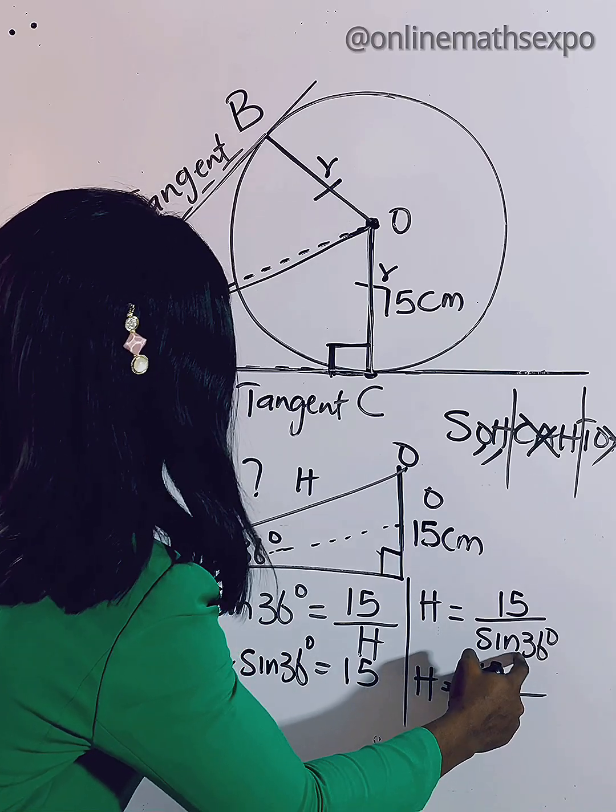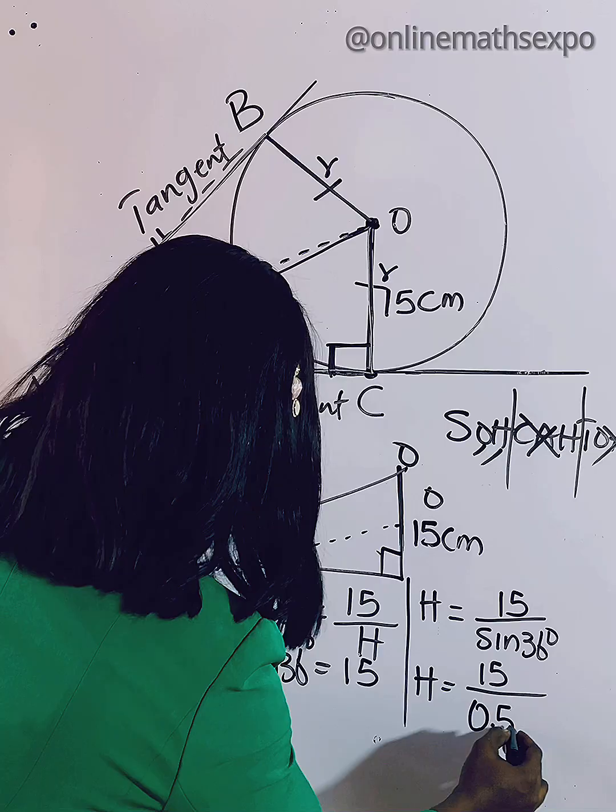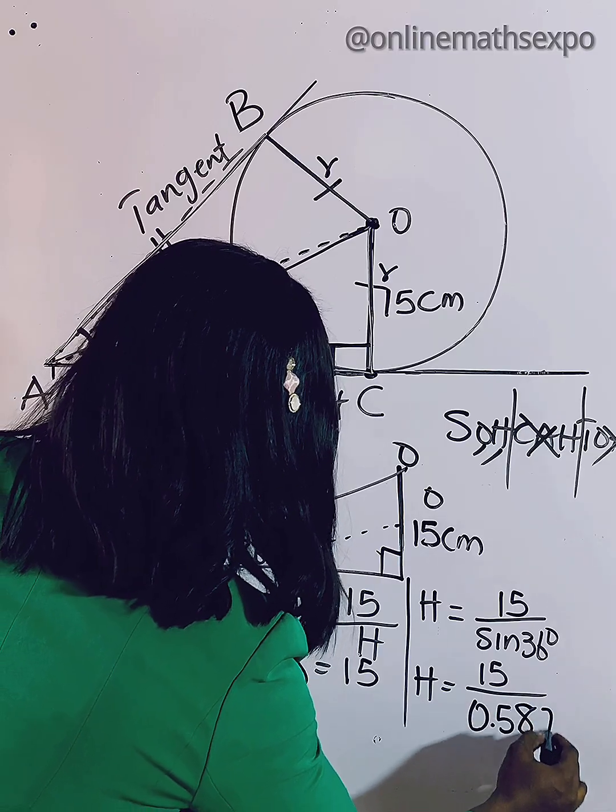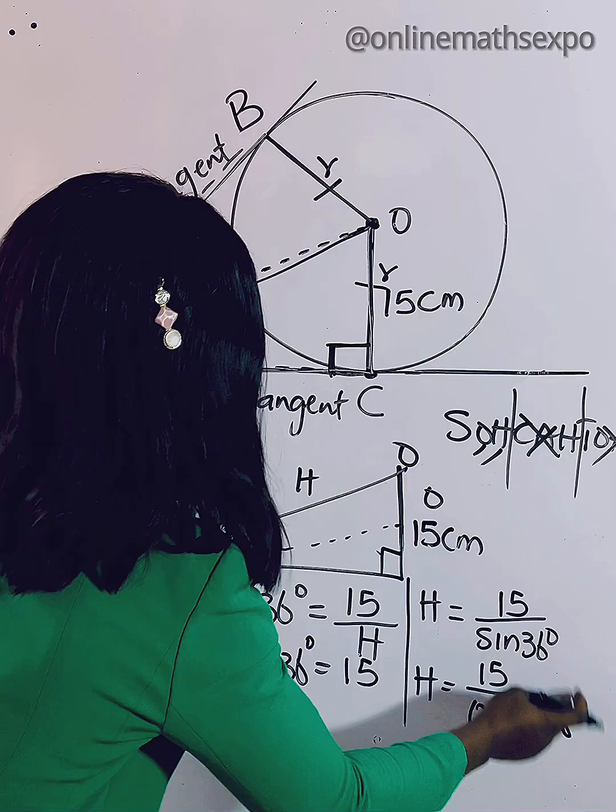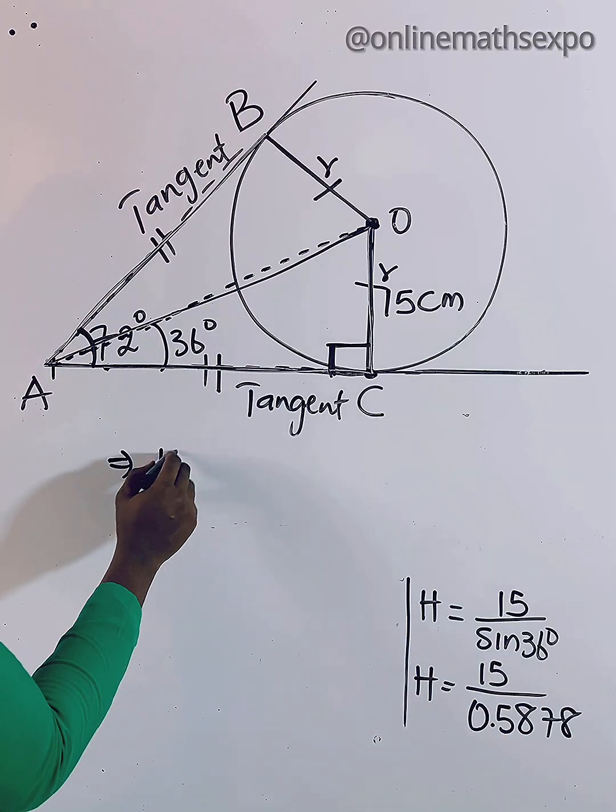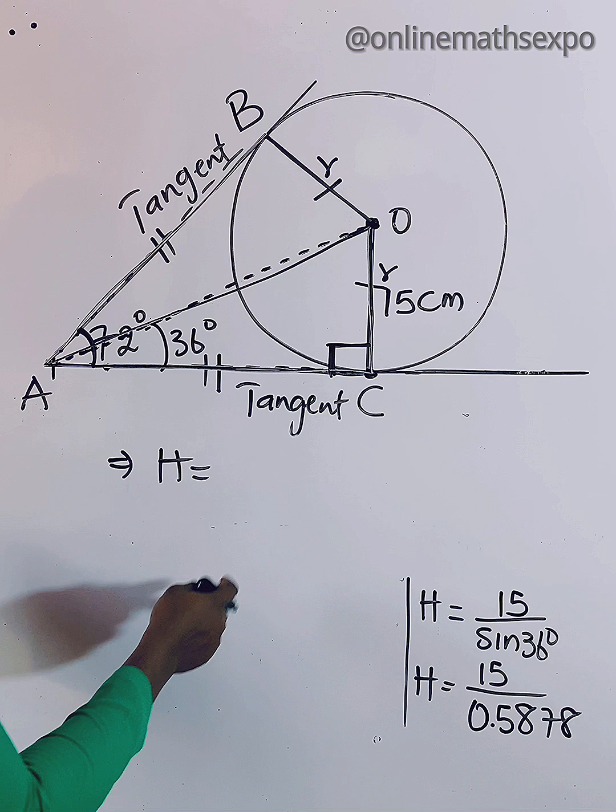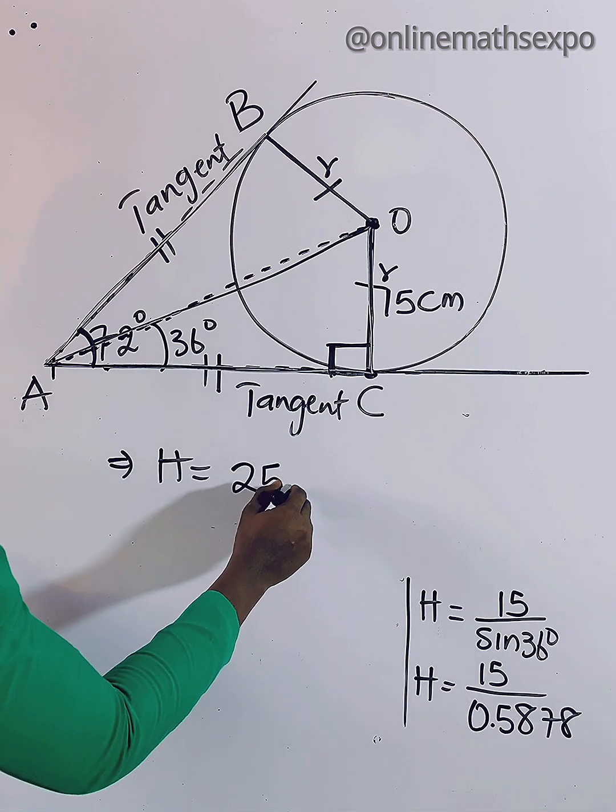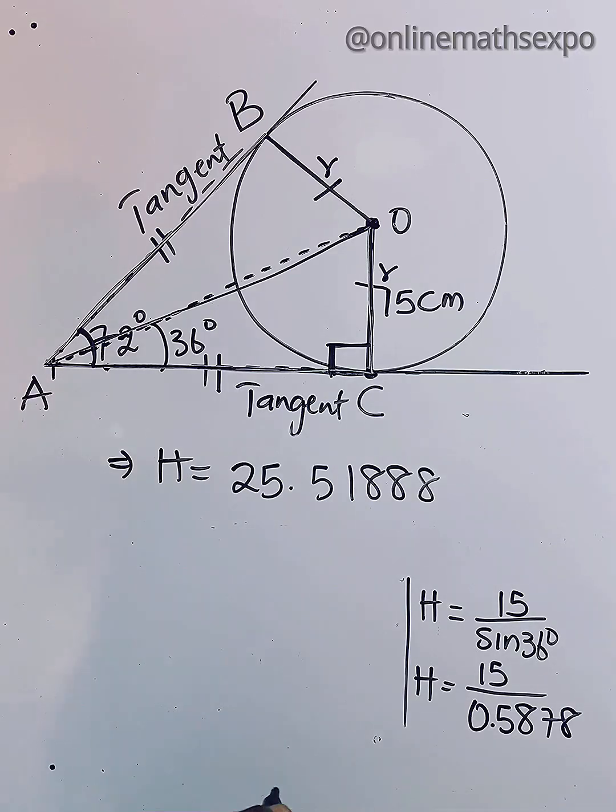What do you do? H gives us 15 divided by - let's get the value of sine 36 - we have 0.5878. So quickly divide this: it gives us H is equal to 15 divided by this, we get 25.51888.